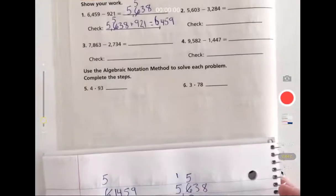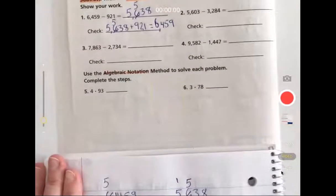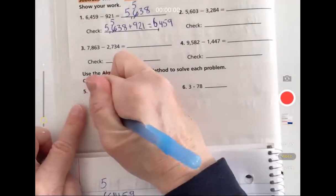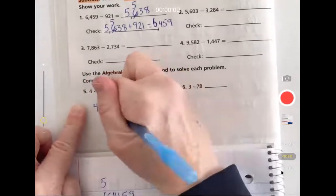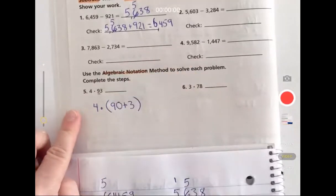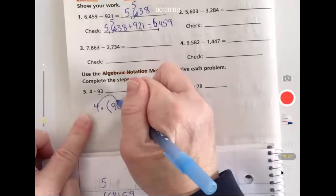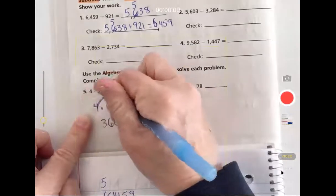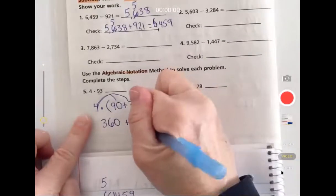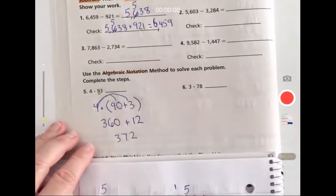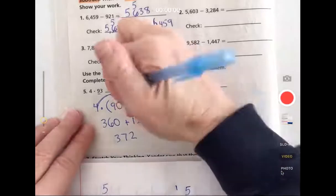The next part, you're using the algebraic notation to solve each one. Remember what that is - it just means you're breaking that part up. It would look like this: we keep this on the outside, four times ninety plus three. We'll continue to do this so the four multiplies to the ninety, four times ninety is three hundred and sixty, plus four times three is twelve. When we put those together we get 372. You can write your answer on the line.